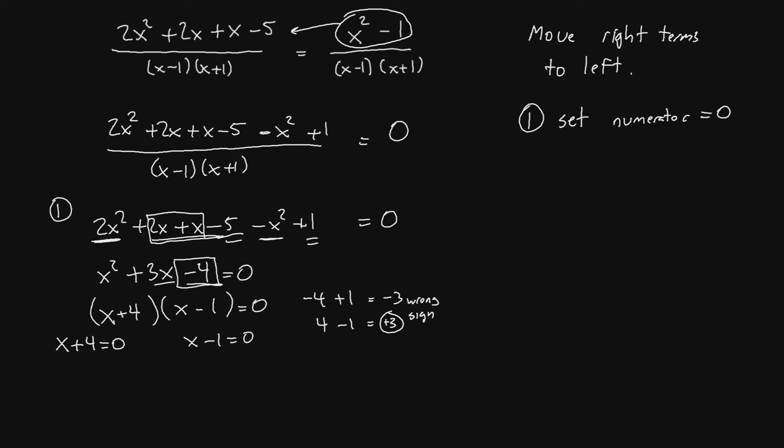Now, if we solve the first expression here x plus 4 equals 0 we'll get x equals negative 4. If we solve x minus 1 and move the negative 1 over we'll get x equals 1.